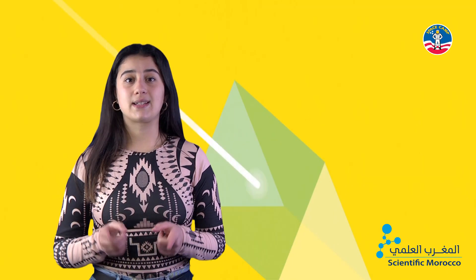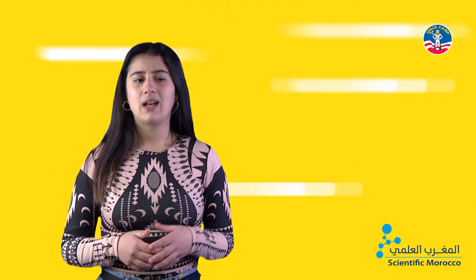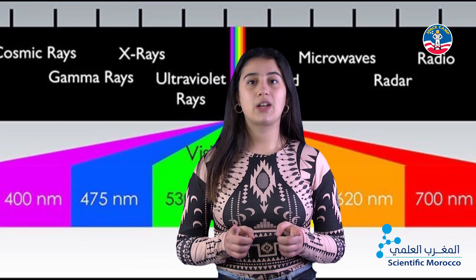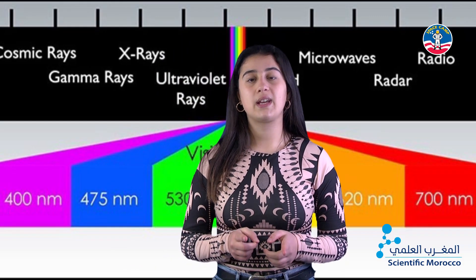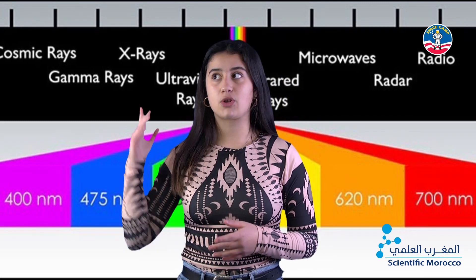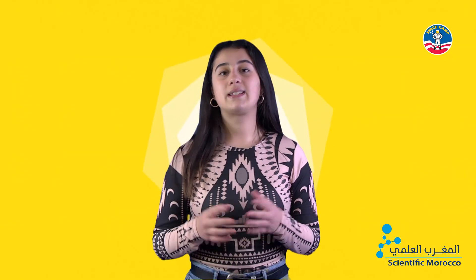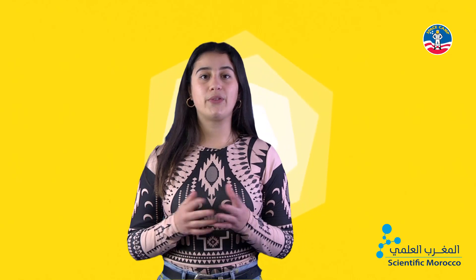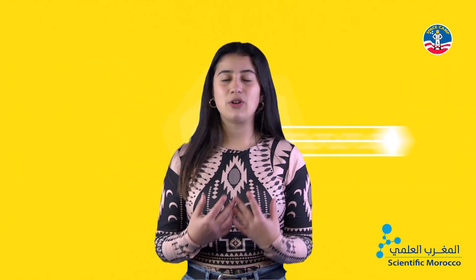Our sun emits light, also known as electromagnetic radiation. Light's family consists of seven types of electromagnetic radiation, which are represented in the electromagnetic spectrum. The tiniest part of this spectrum is what we call visible light — it's the only radiation we can perceive, and the only type we as humans are conditioned to see.